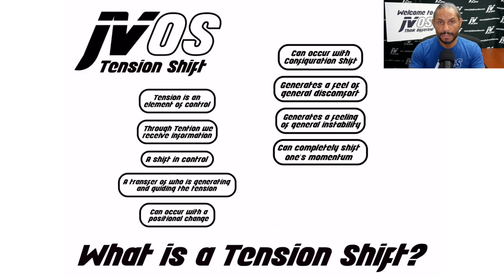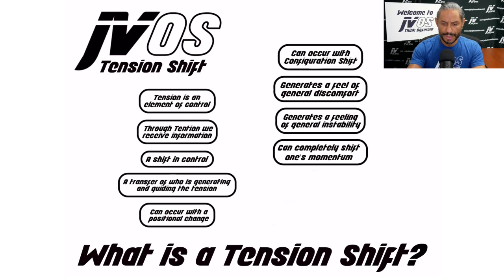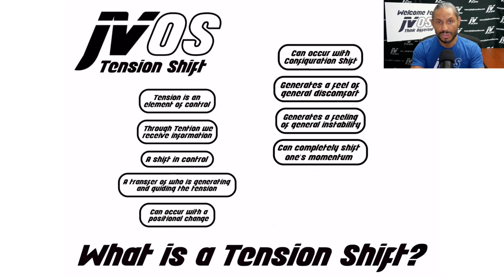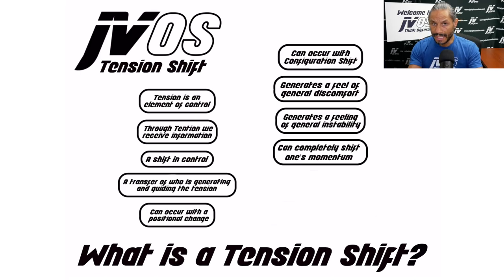The opponent is attacking you, and you're able to perform a tension shift through a configuration shift, and it completely shuts down what the opponent was doing. Now they've got to go back, reassert the position, and reestablish dominance in order to continue the onslaught. By making them stop and go back, this is a tension shift.